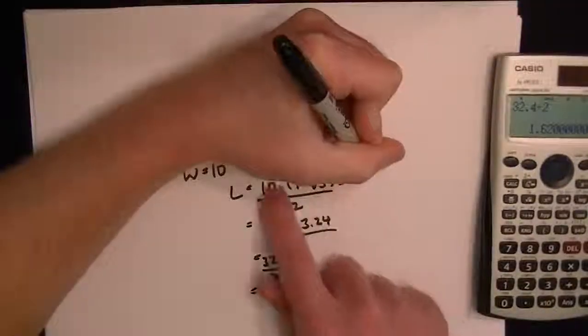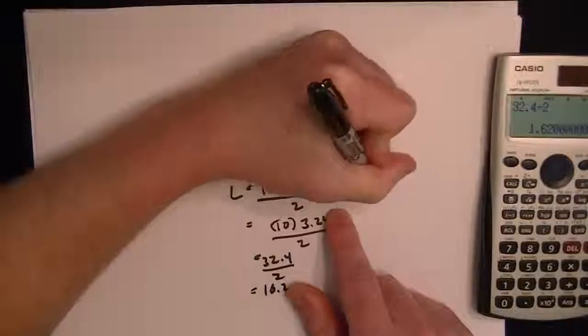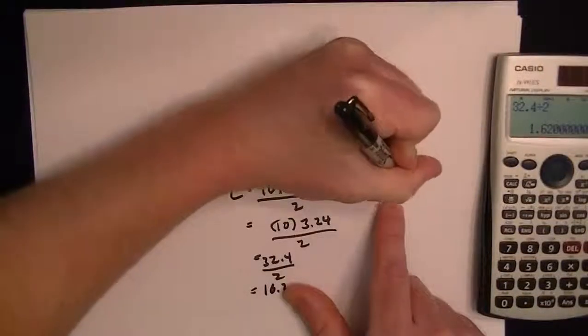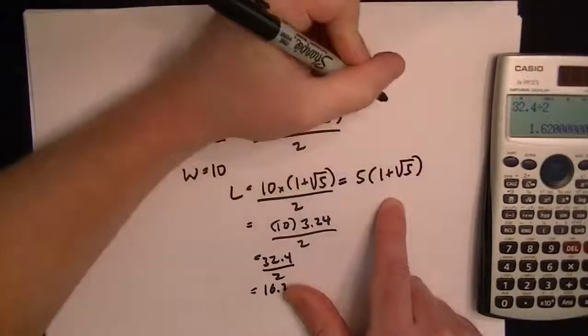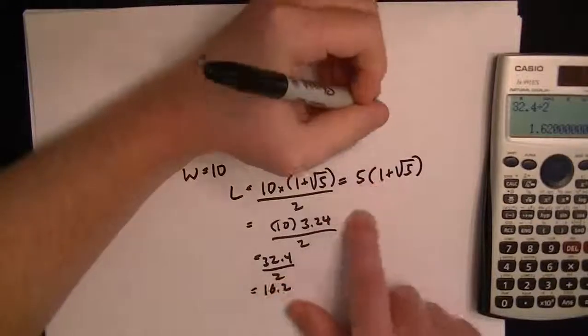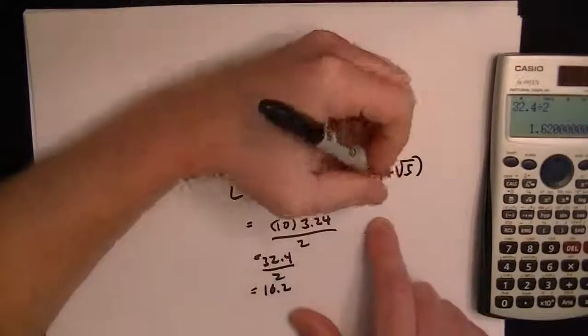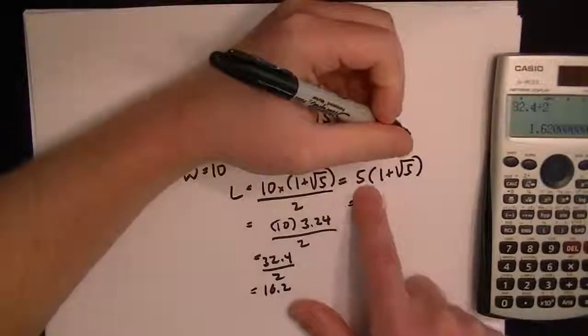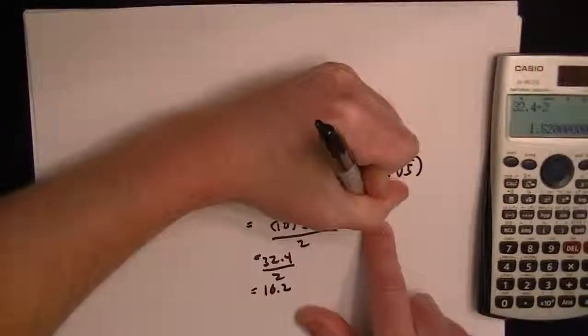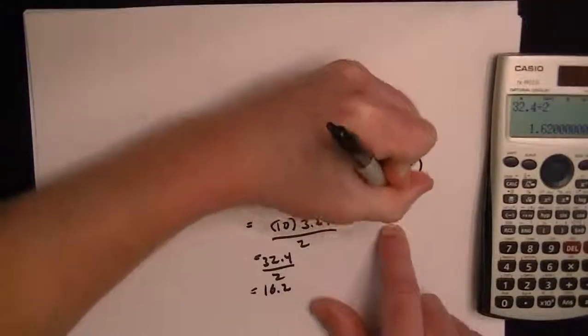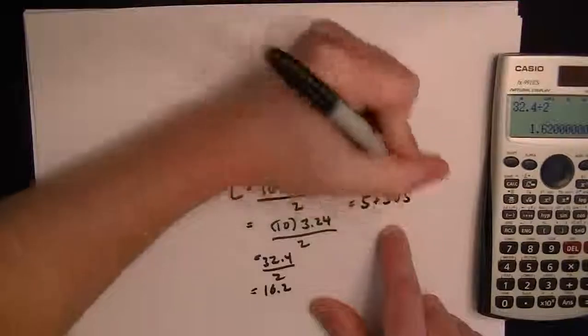Another way to do this is 10 divided by 2 would just give you 5 times 1 plus root 5, so I haven't broken anything here. You can divide that through, and then if you wanted to you could also multiply through, so you could get 5 plus 5 times the root of 5.